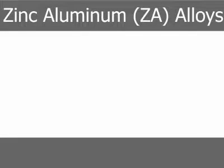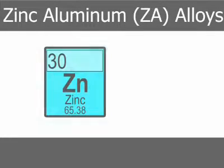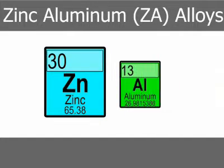Zinc aluminum alloys, also known as ZA alloys, have existed in various forms, primarily as gravity casting alloys, since 1959. Recent research and development has refined the chemical composition and adapted this alloy group to die casting, where they have proven very successful.